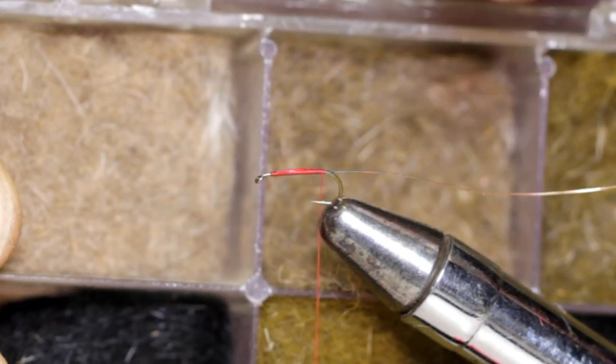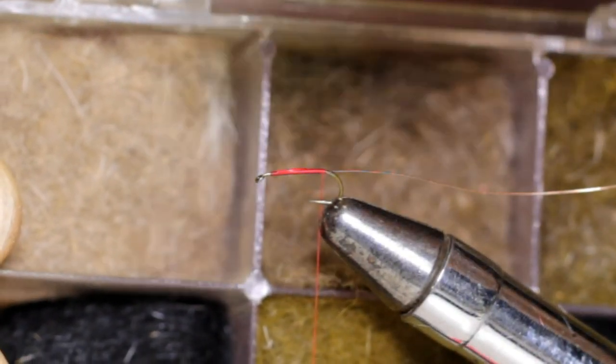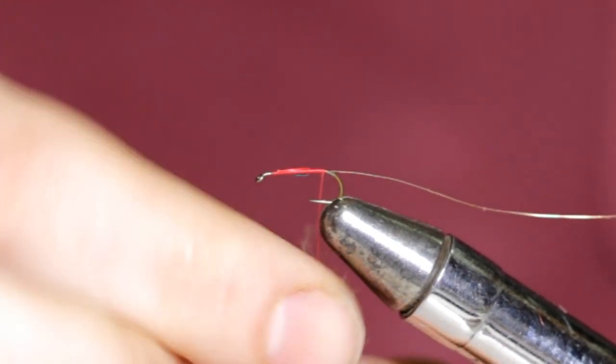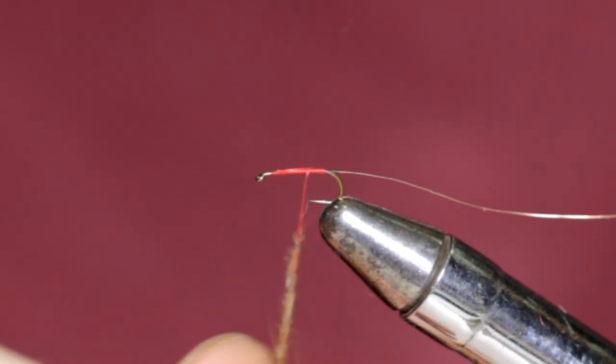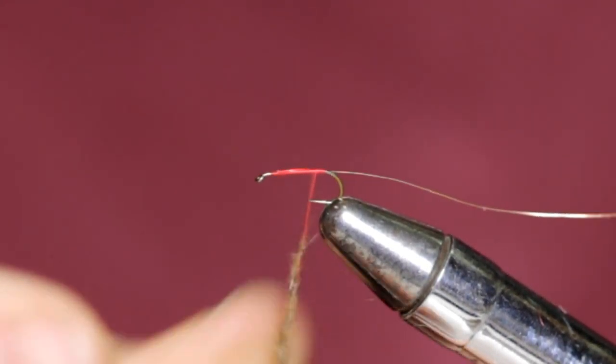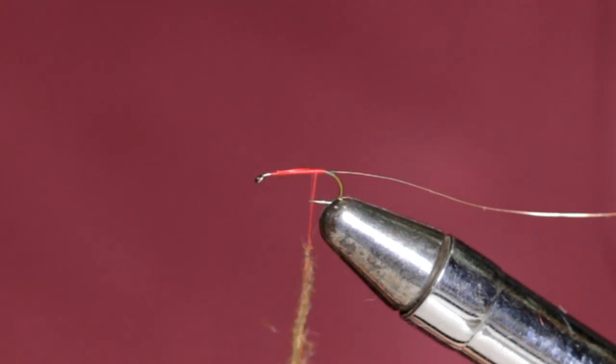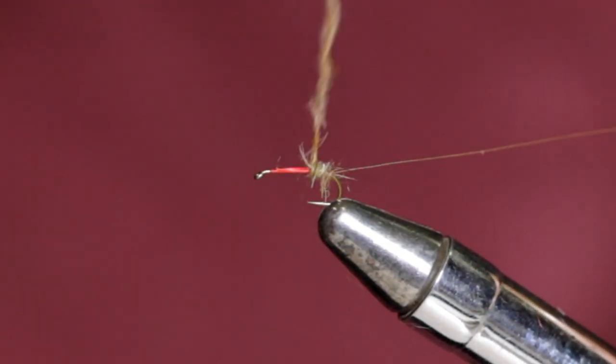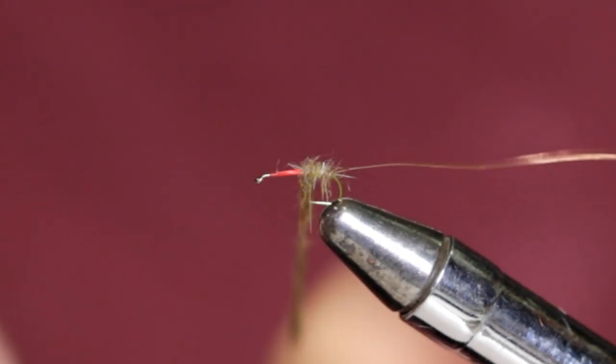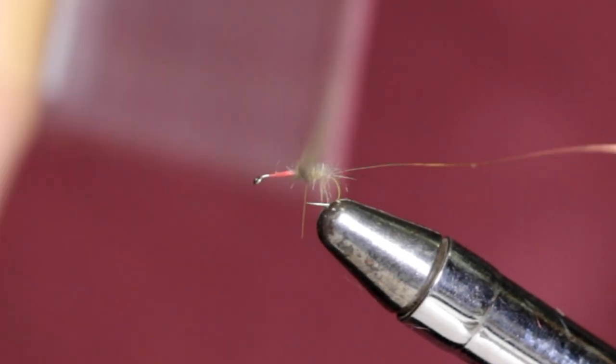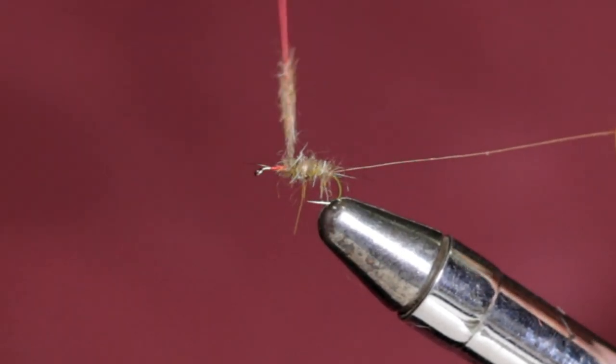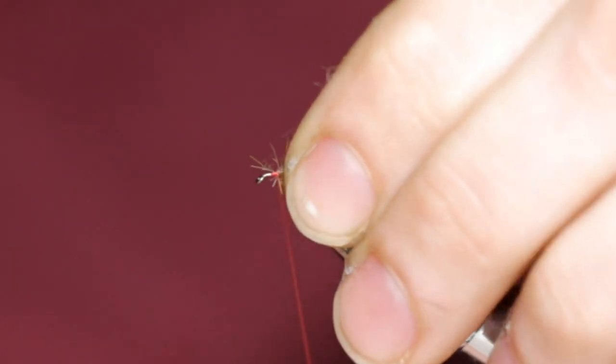Now I'm going to grab some dubbing. I prefer a darker blend of hair's ear, so I'm going to grab this one in the middle. Just grab a pinch, spin it onto the thread like so, make a nice dubbing rope. Alright, I've got this rope made. I'm just going to wind forward, give the rope a spin if it needs one to keep it tight, just keep advancing forward. I'm going to stop here, about where my thread base stops, and take a few wraps in front.